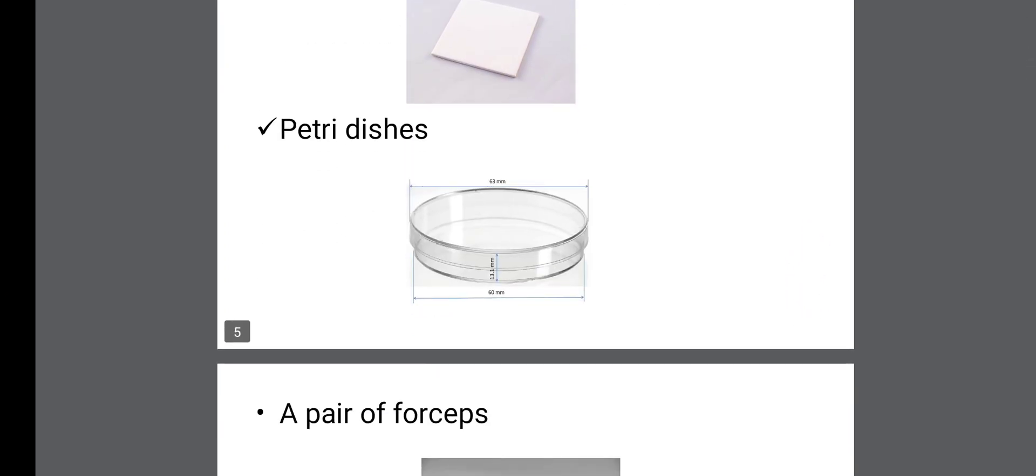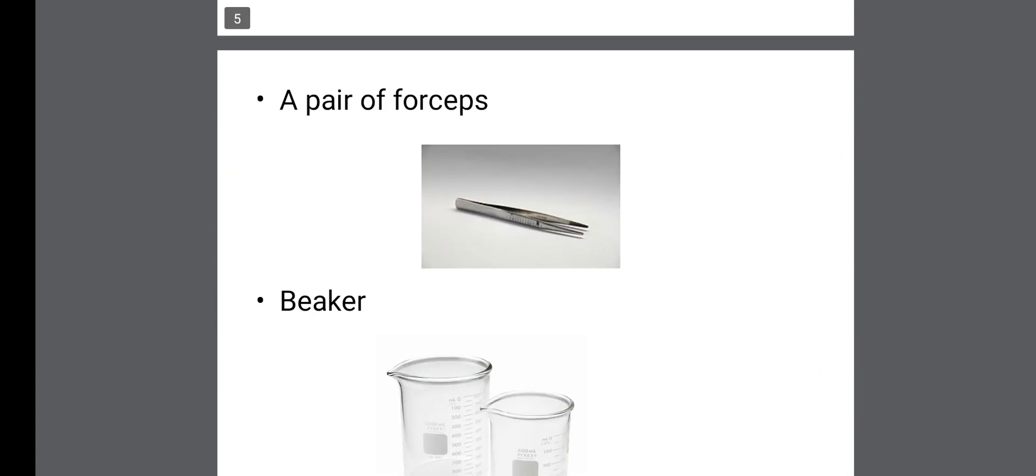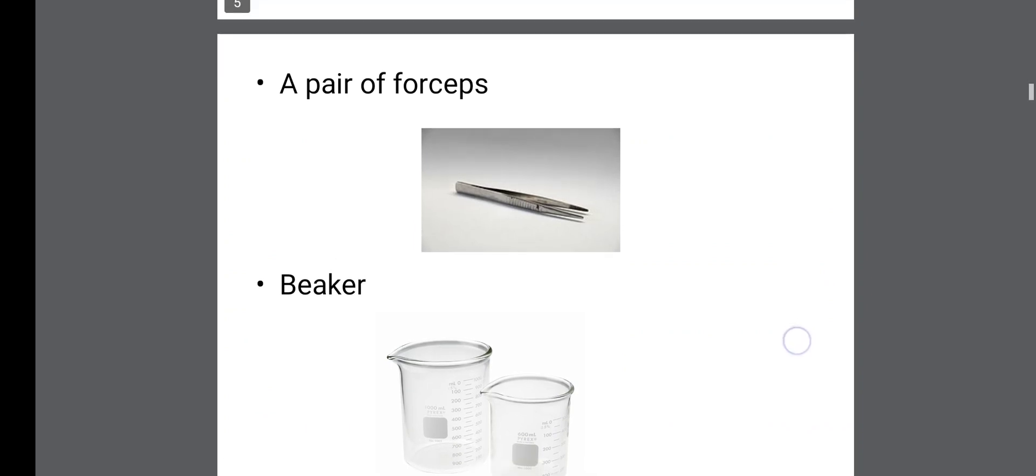Then petri dishes. Petri dishes are where specimens are actually placed on. A forcep. A forcep is used to pick the specimens. You use it to pick the specimen to avoid the effects of formaldehyde on your hand.